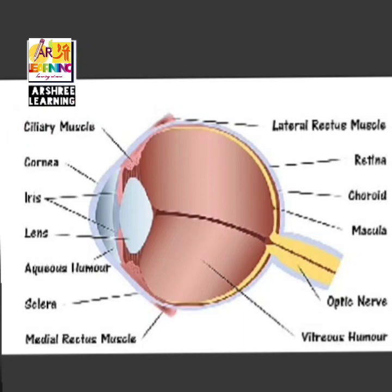The next part of the eye shown in this figure is the optic nerve. It is joined to the retina and its function is to take the image from the eye to the brain, where the image is finally formed.